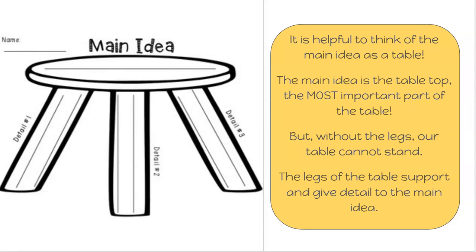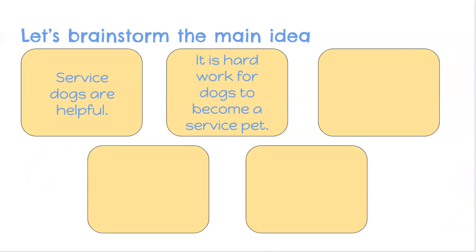On these legs I would write in details that came right from the text that help support what I think the main idea is. So today we are going to practice and do a little bit of brainstorming about our story The Right Dog for the Job. First we need to think about that main idea. I gave us a few examples about what I think the main idea of our story is. It's okay if you think it's something different, but remember our main idea needs to have those details and those legs to support it.